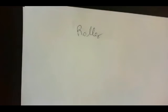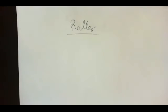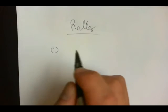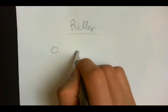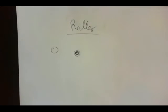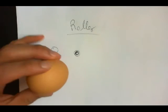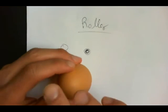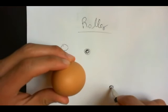Next we have a roller. Think of a roller as a wheel or a sphere. Suppose I've got this egg. Pretend that it's a sphere. Suppose this egg is this sphere here.